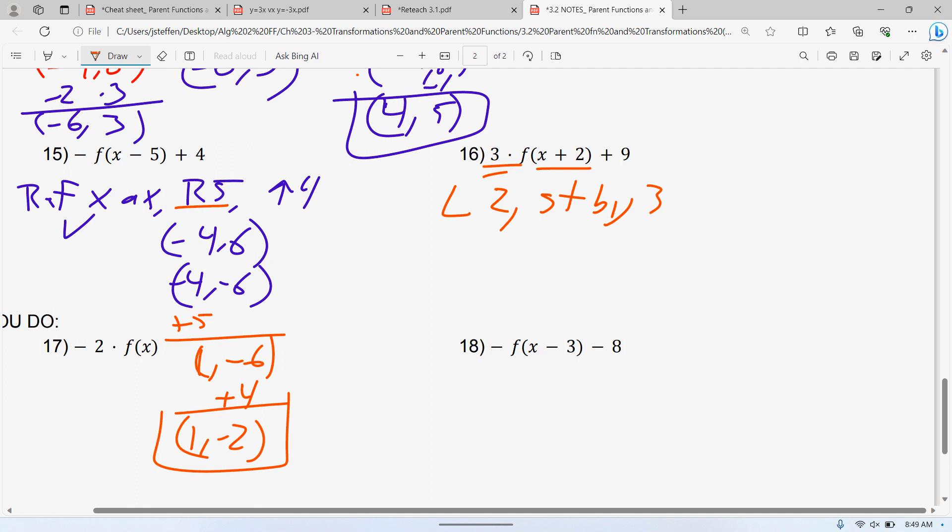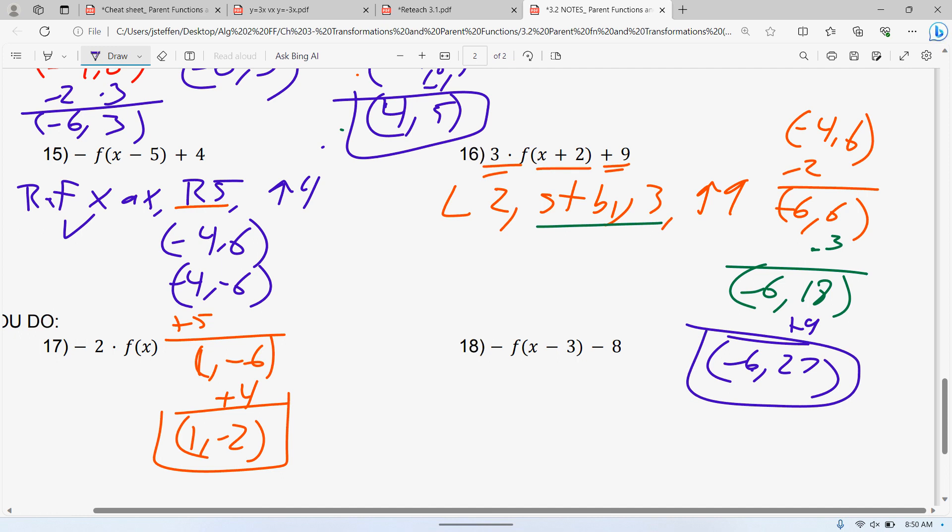Stretch by factor 3, up 9. So 2 to the left, again, if you need to look at that table, 2 to the left means we're subtracting 2 from your x-value. So negative 6, 6. The stretch by a factor of 3 is multiplying your y-value by that 3. And to compress, it doesn't matter. It's always the y-value. So multiplying that by 3 is negative 6 and 18. And up 9 is, we add 9 to the 18, so that's negative 6 and 27. Kind of a crazy ordered pair, but that's okay.